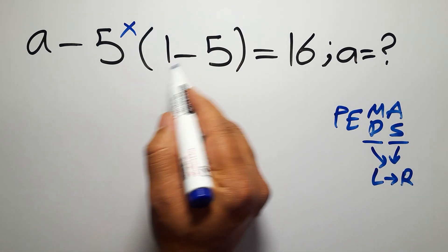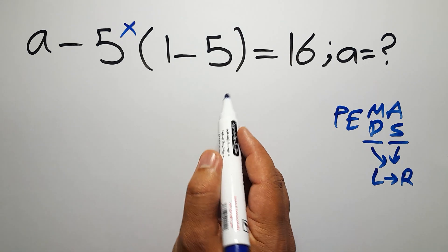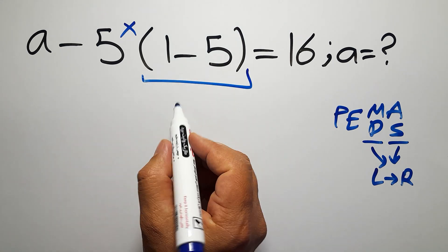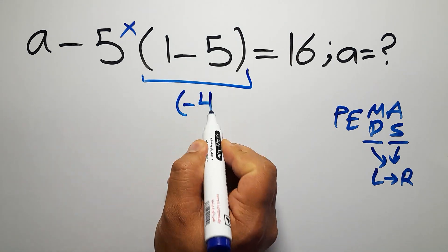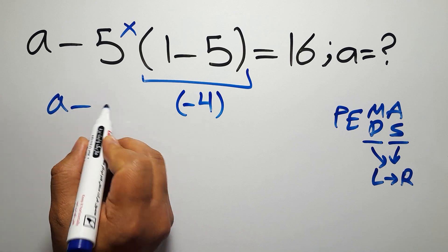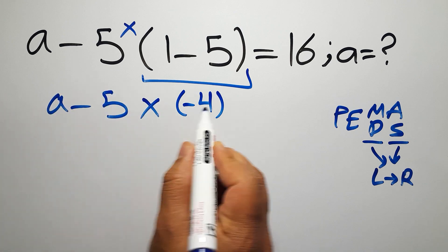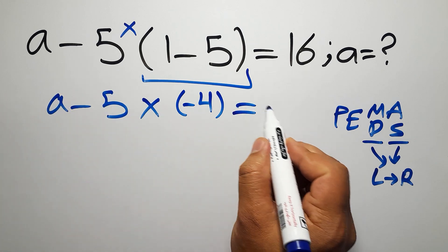So here, first, we have to do these parentheses. 1 minus 5 gives us negative 4. So A minus 5 times negative 4 equals 16.